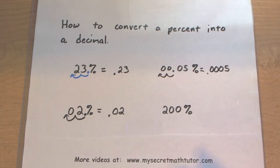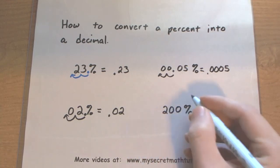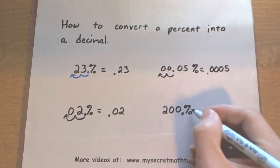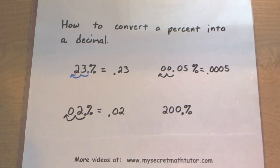All right, looking good. All right, one last one. Let's see, let's think of where the decimal is. The decimal is right before the percent. So this is 200%. Let's move it over.